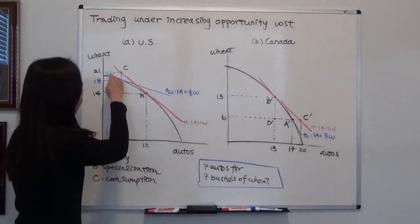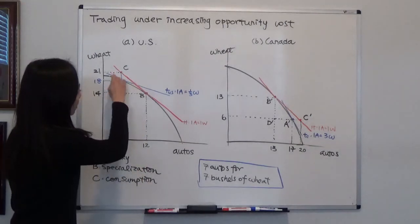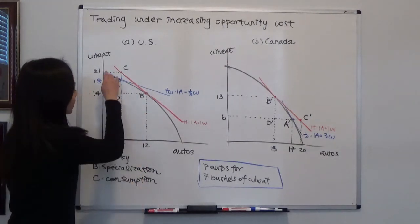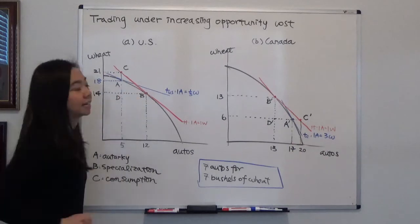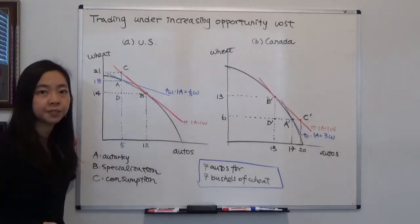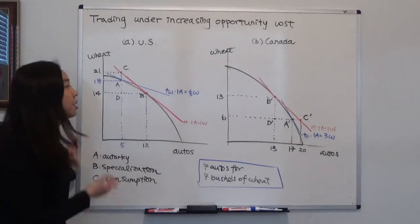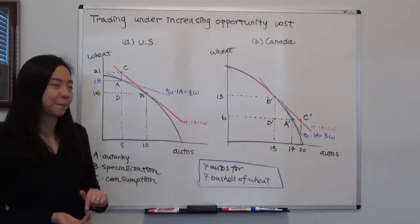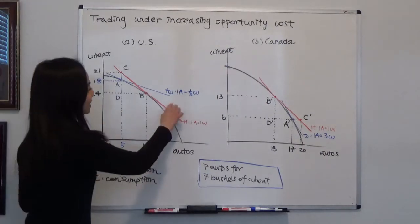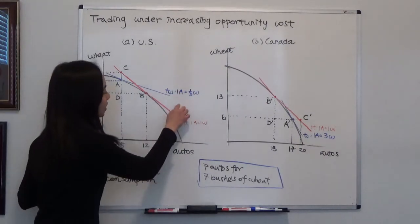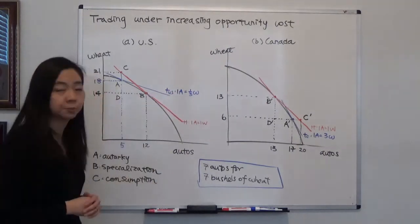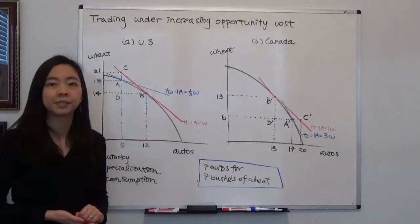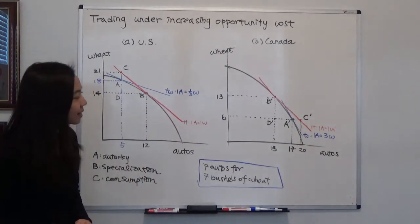You can find the tangent line to the production possibility curve there, and the slope of the tangent line is going to tell you the opportunity cost of an automobile in terms of wheat. In this example, the opportunity cost of one automobile is one-third bushel of wheat.